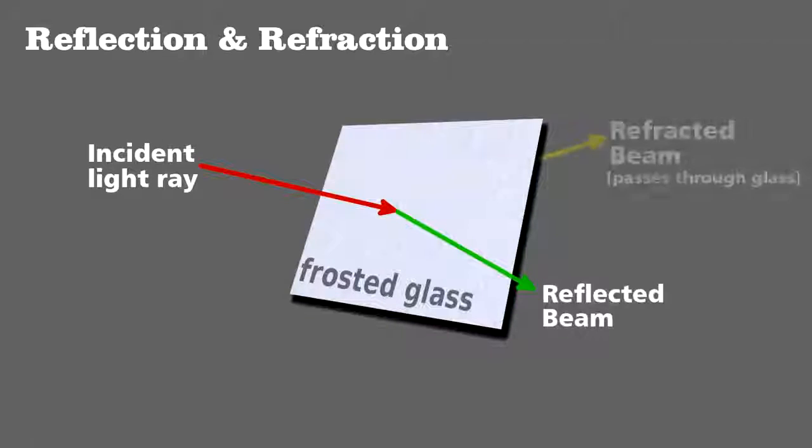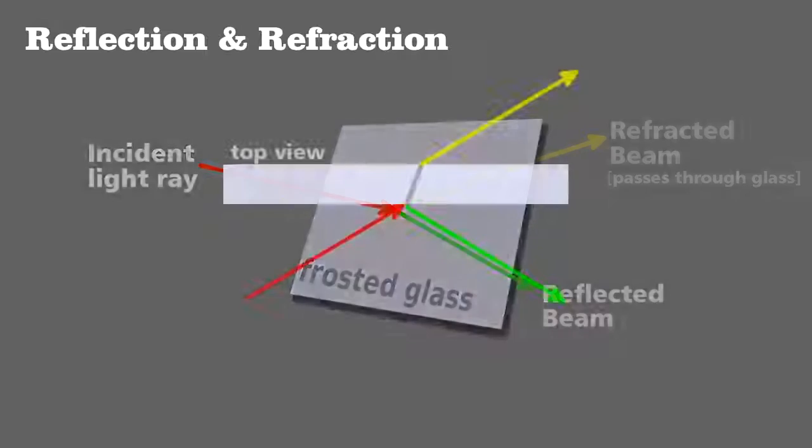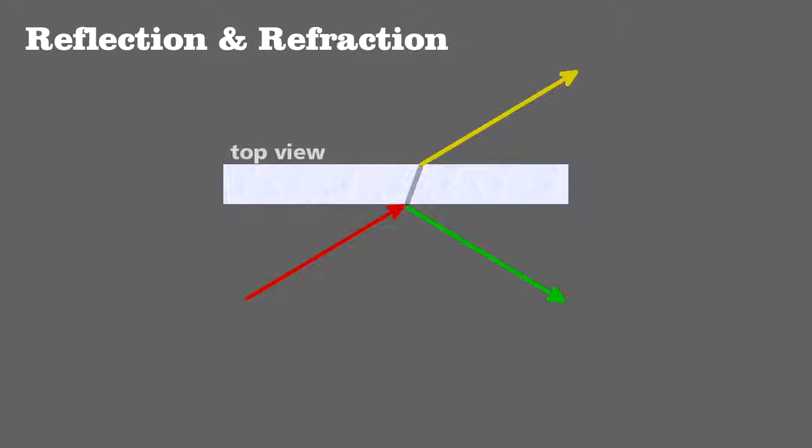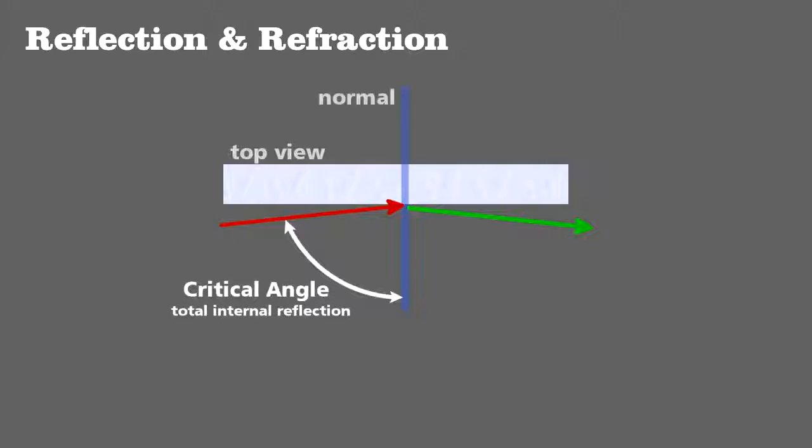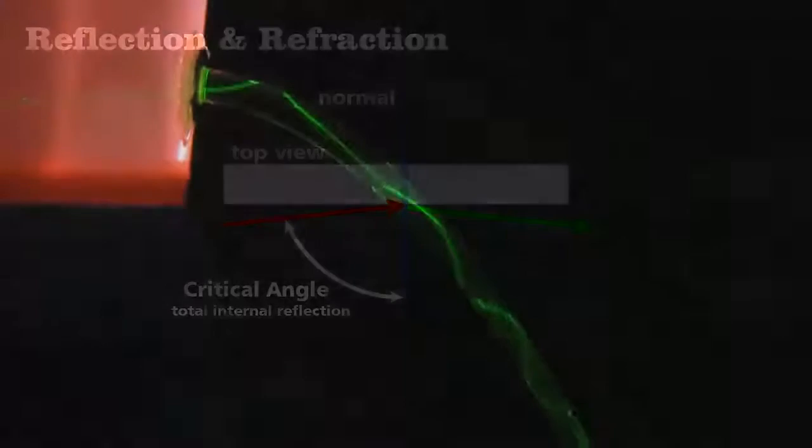Recall that any time light strikes a surface, it can either be absorbed by the material, reflected from it, or pass into and through it. The latter we call refraction. It's easier to see from a top view. Reflection and refraction can happen at the same time, but if a light ray hits the surface at an angle greater than the critical angle, it will be completely reflected and not refracted.